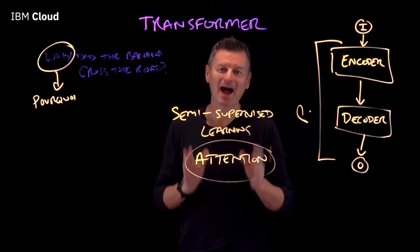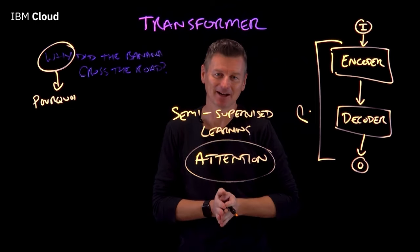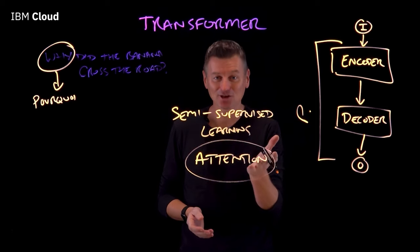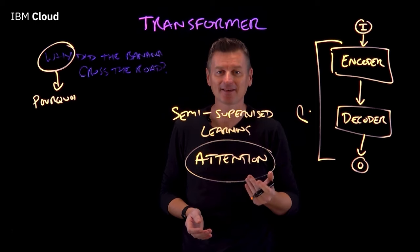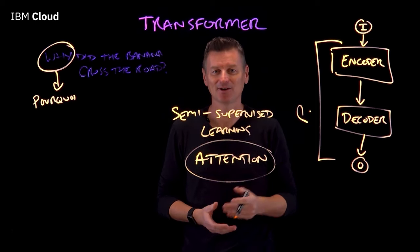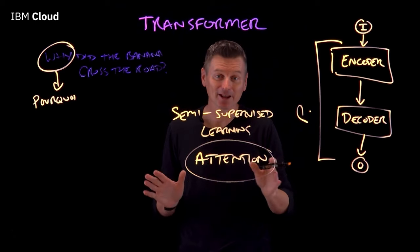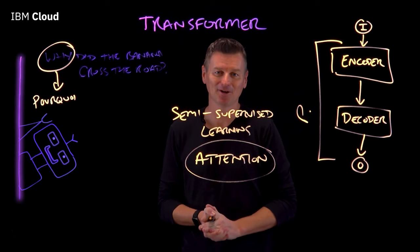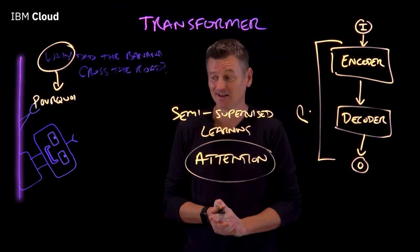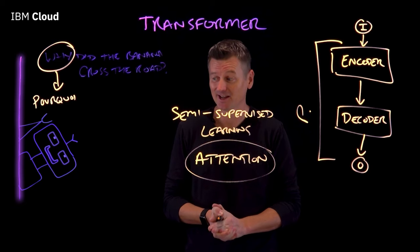Transformers are a powerful deep learning model, and thanks to how the attention mechanism can be parallelized, they're getting better all the time. Who knows — pretty soon maybe they'll even be able to pull off banana jokes that are actually funny. If you have any questions, please drop us a line below, and if you want to see more videos like this, please like and subscribe. Thanks for watching.